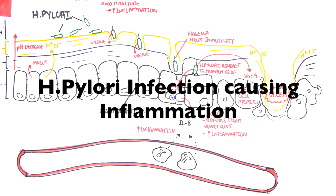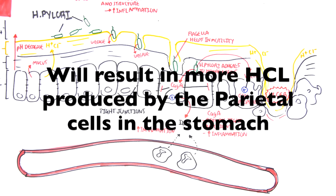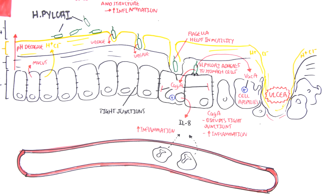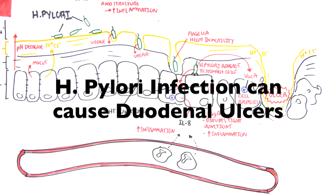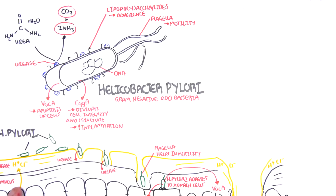It should be noted that H. pylori infection in the stomach promotes inflammation, which actually results in a lot more hydrochloric acid being produced by the parietal cells — because inflammation promotes hydrochloric acid secretion due to histamine, for example. With so much hydrochloric acid being produced, it can actually enter the duodenum, which is normally basic, and so this H. pylori infection can result in a duodenal ulcer as well.